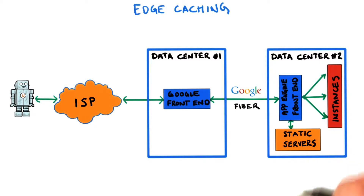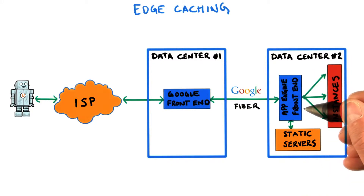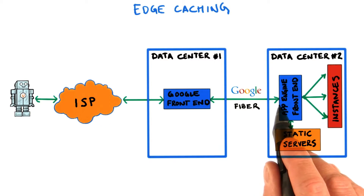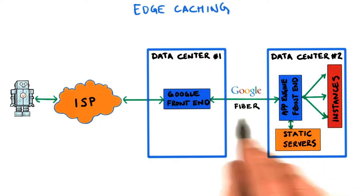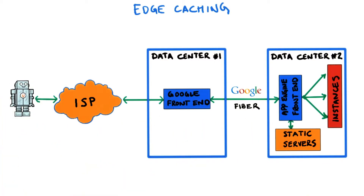But if the request is for static content, for example images or static HTML, the front end can retrieve it directly from the static servers. And in both cases, the response is returned back to the user.